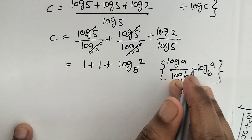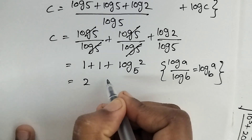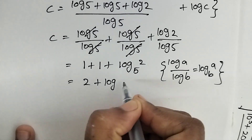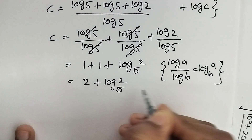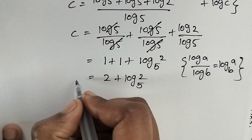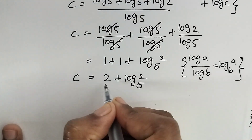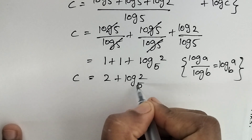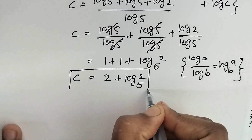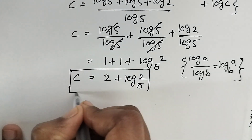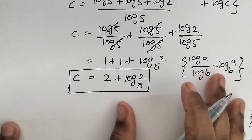So 1 plus 1 plus log of 2 to the base 5. Therefore c is equal to 2 plus log of 2 to the base 5. This is the solution for c.